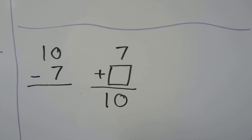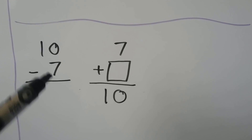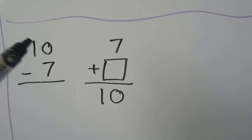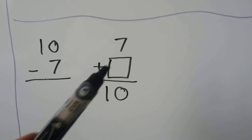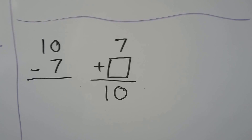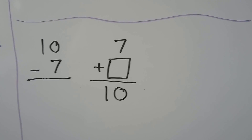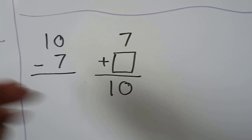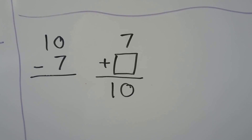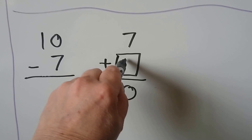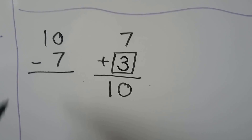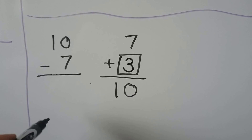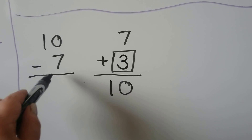10 minus 7. We can think 7 plus some number is equal to 10. We can start at the 7 and count on to 10: 7, 8, 9, 10. That was 3. So 7 plus 3 is equal to 10, and 10 minus 7 is equal to 3.